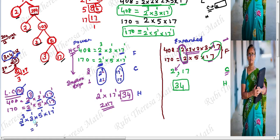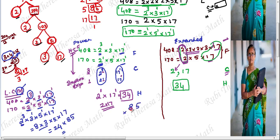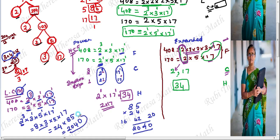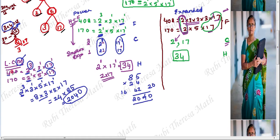Calculating: 2 power 3 is 8. 8 × 3 = 24. Then × 5: 24 × 5 = 120. Then × 17: 8 × 2's are 16, 5 × 4's are 20, 8 × 4's are 32, 32 plus 10 is 42 — so the result is 2040. The LCM of 408 and 170 is 2040.